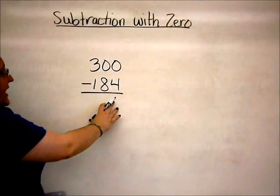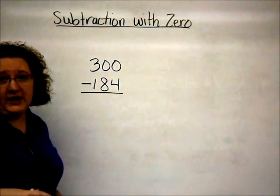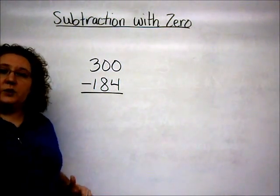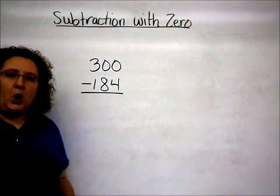We're going to use this example of 300 minus 184 for the three methods that I'm going to show. So first, as I said, we're going to start with the traditional method of borrowing.